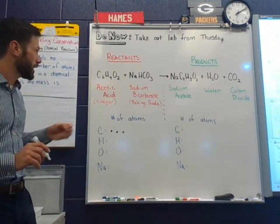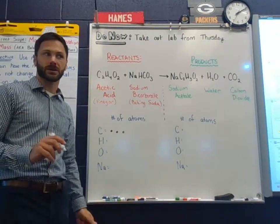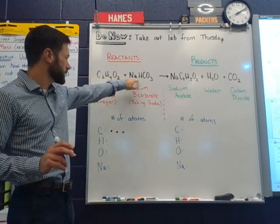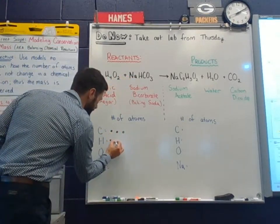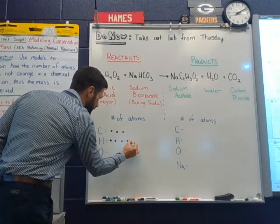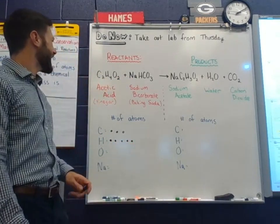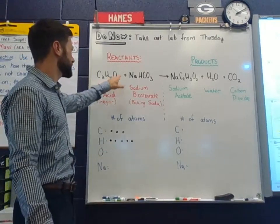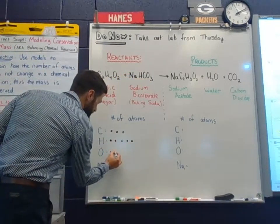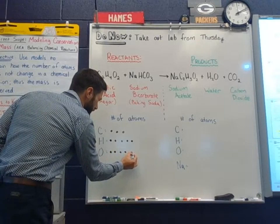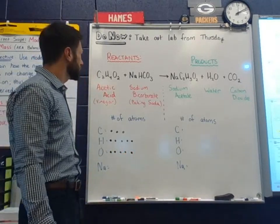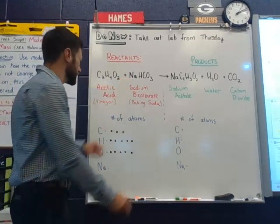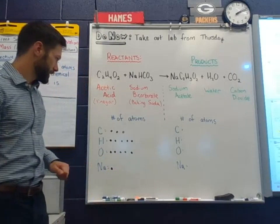How many hydrogen atoms are on the reactant side of the equation? Amanda? Five. Five. We got four hydrogen here plus one here. Yep. Five. One, two, three, four, five. All right. How about oxygen? Quinn? Five. We have two oxygen here plus three. One, two, three, four, five. Okay. Good. And how about sodium? Sabrina? One. Yeah, just one sodium present in the sodium bicarbonate.